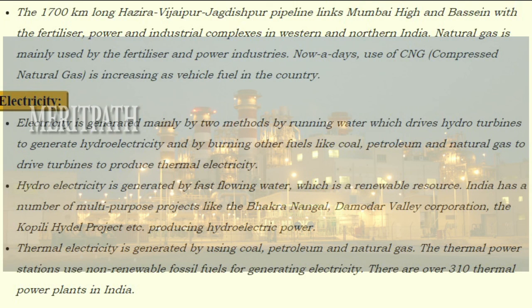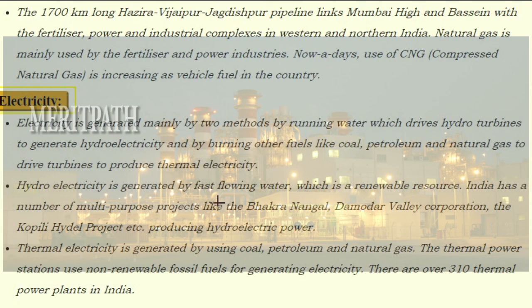Electricity is generated mainly by two methods: by running water which drives hydro turbines to generate hydroelectricity, and by burning fuels like coal, petroleum, and natural gas to drive turbines to produce thermal electricity. Hydroelectricity is generated by fast-flowing water, which is a renewable resource. India has a number of multi-purpose projects like the Bhakra Nangal project, Damodar Valley Corporation, and Kopili Hydel project producing hydroelectric power. Thermal power stations use non-renewable fossil fuels; there are over 310 thermal power plants in India.